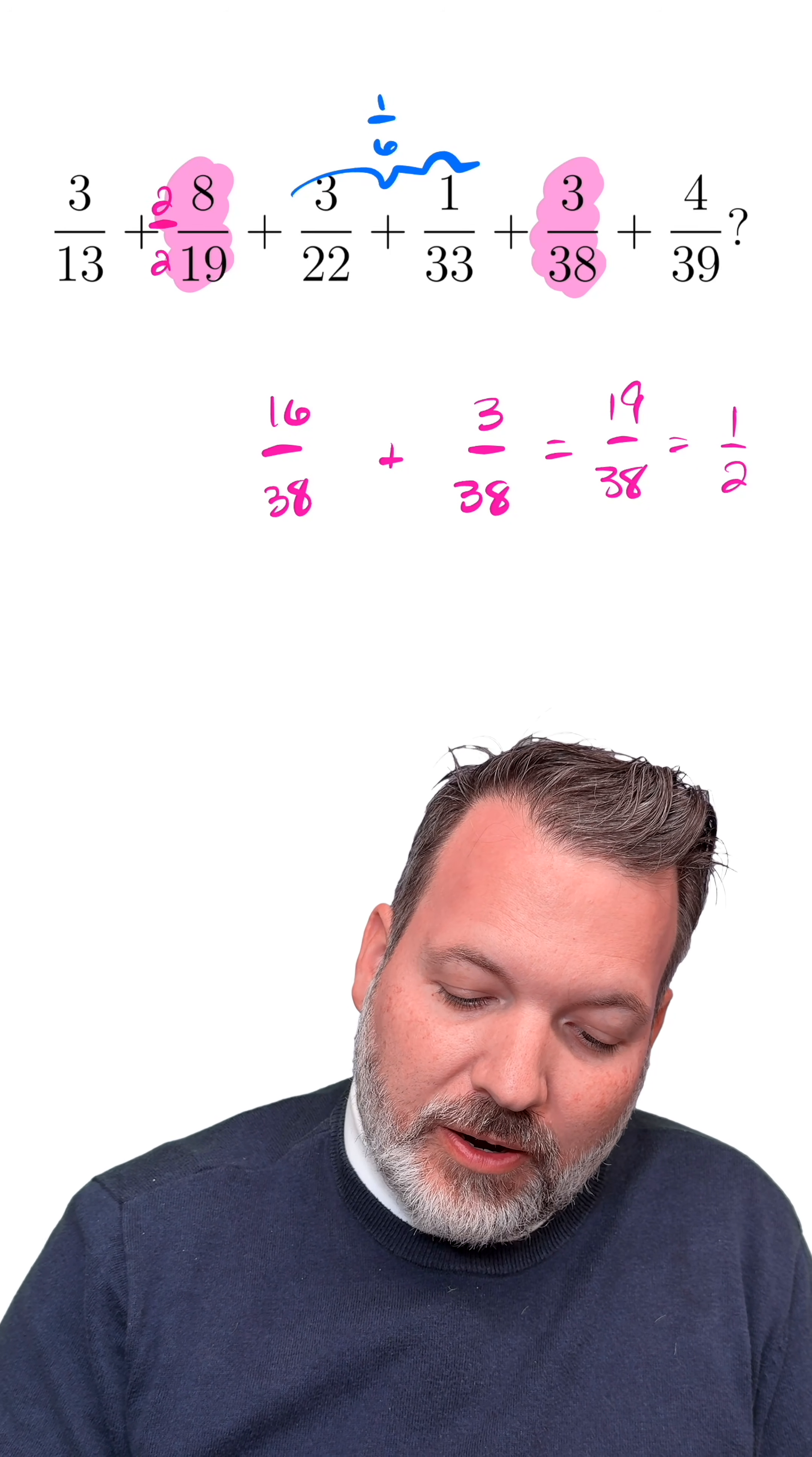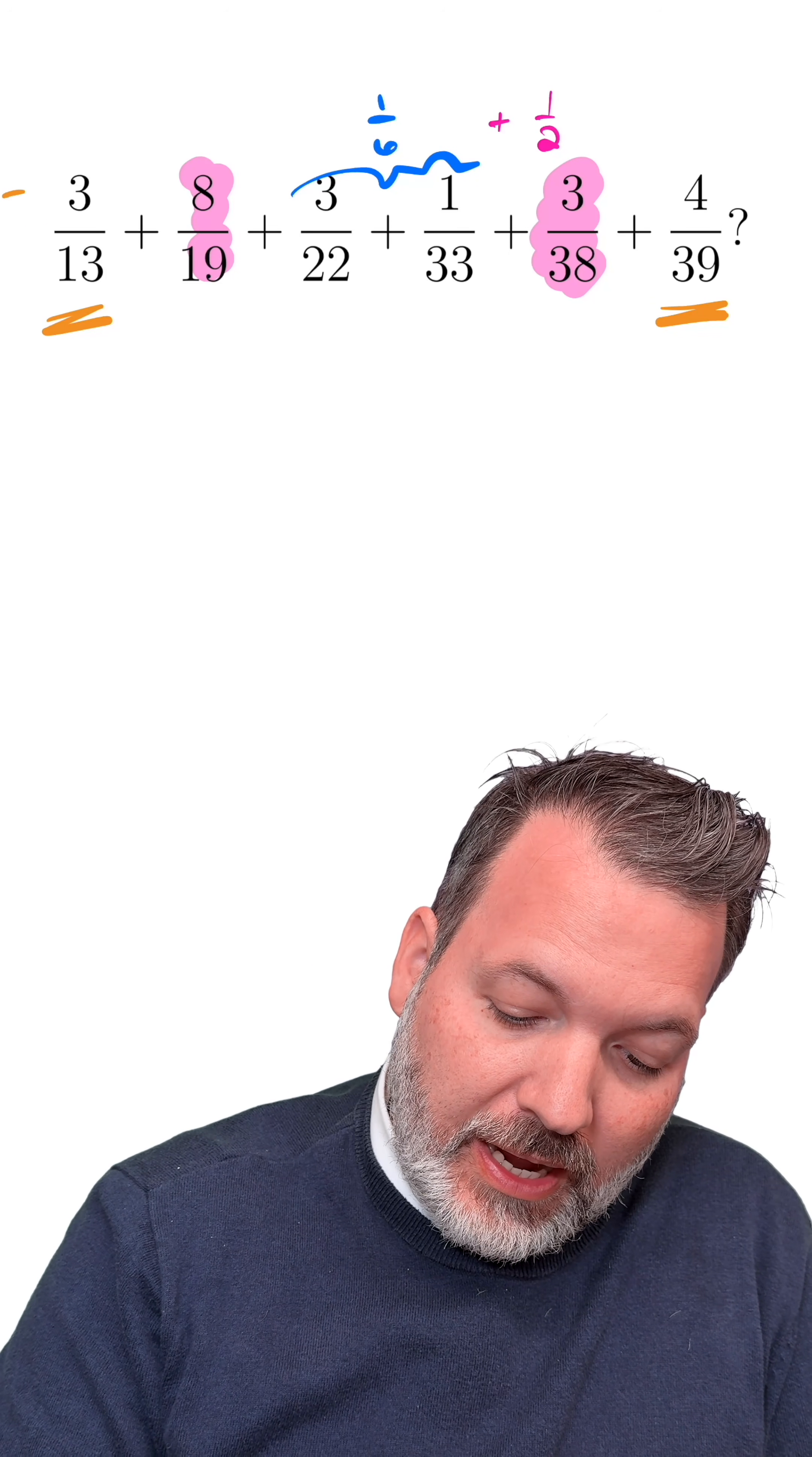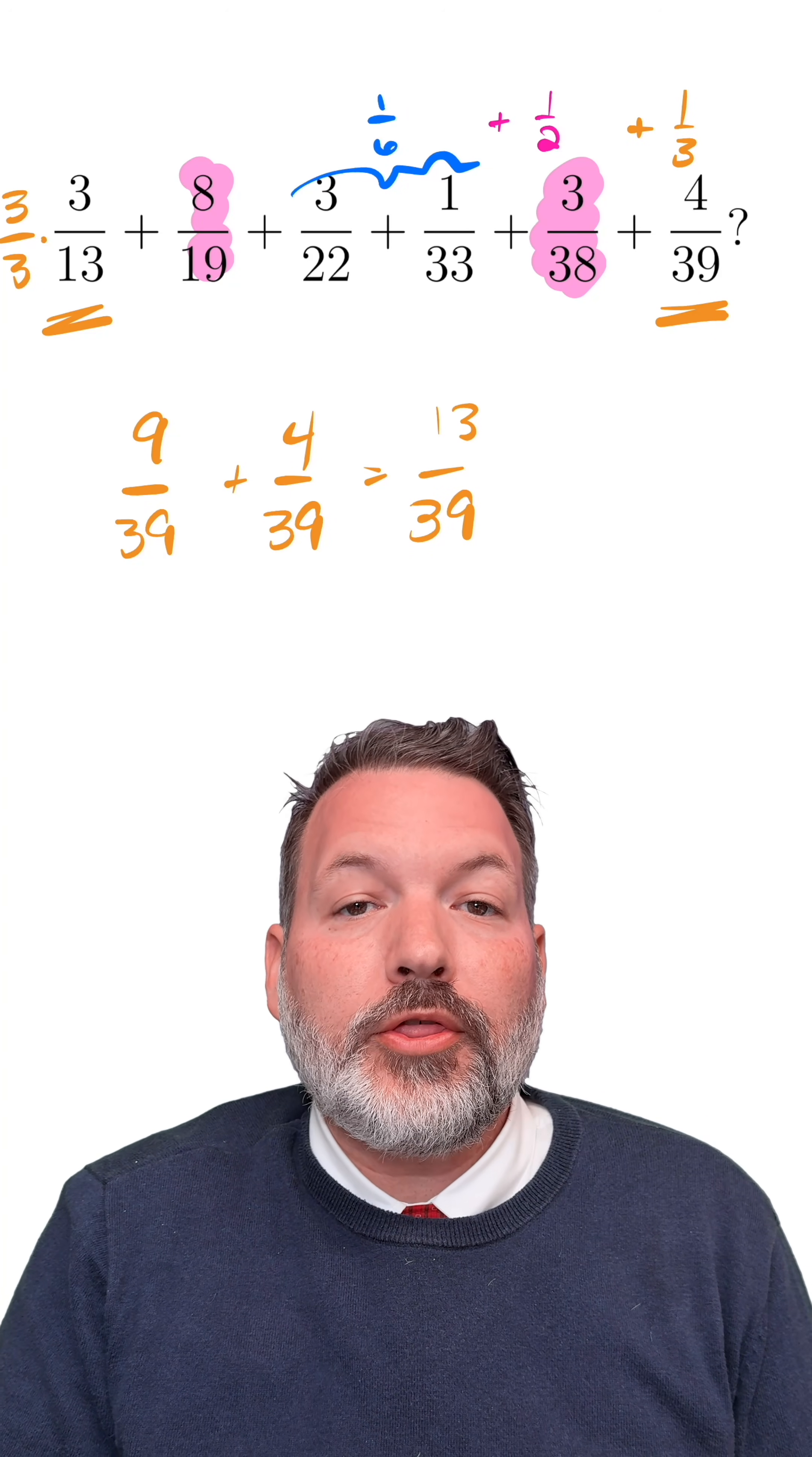I can see what's happening here: as we add together the not-so-nice fractions but pair them up in nice ways, they end up making much nicer fraction pairs. Fortunately, 4/39 and 3/13 again have a nice relationship in the denominator. 13 is a factor of 39, so if we multiply that first fraction by 3/3, we get 9/39, which we can add to 4/39, giving us 13/39, or 1/3.